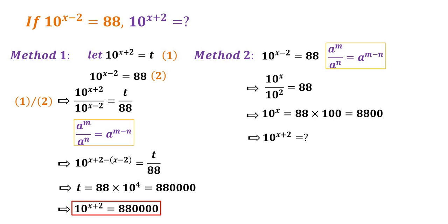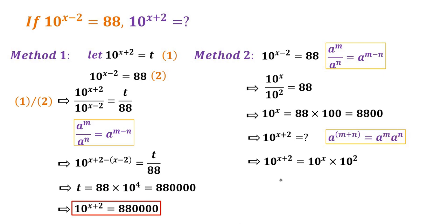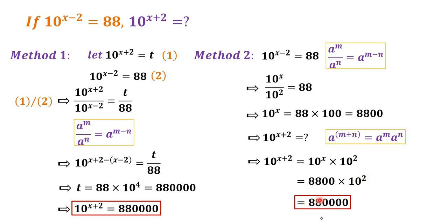So what we are going to solve is the value of 10 to the power of x plus 2. For this term, we apply the rule a to the power of m plus n is equal to a to the power of m times a to the power of n. Then we have 10 to the power of x plus 2 equal to 10 to the power of x times 10 to the power of 2. Since we already know 10 to the power of x is 8,800, we get 8,800 times 100, which equals 880,000.